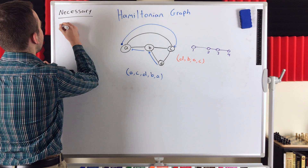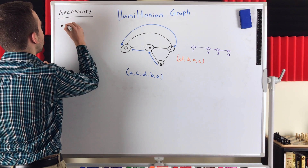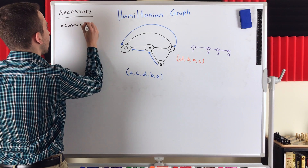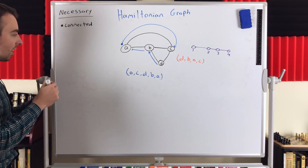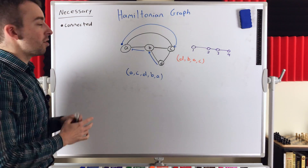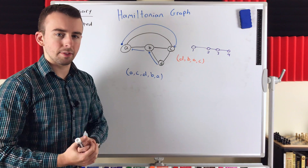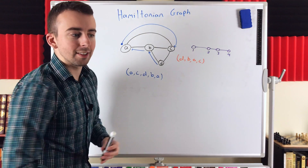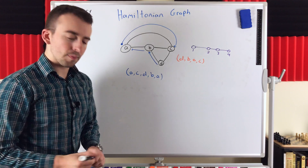One very obvious necessary condition for a graph to be Hamiltonian is that it has to be connected. If a graph is disconnected, there's no way it can contain a cycle that includes every vertex, because there will be vertices in another component that you can't reach.